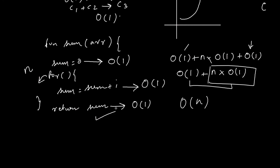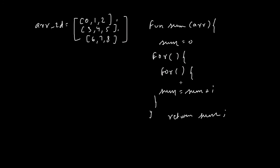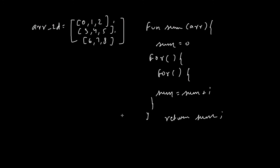That is how we determine the time complexity of a function without using a graph. Now let's see another example with a 2D array. We have a function that initializes sum and returns the sum of all elements of the 2D array. Traversing a 2D array requires two for loops, so we have two for loops here. Sum = 0 takes O(1), and return sum also takes O(1).